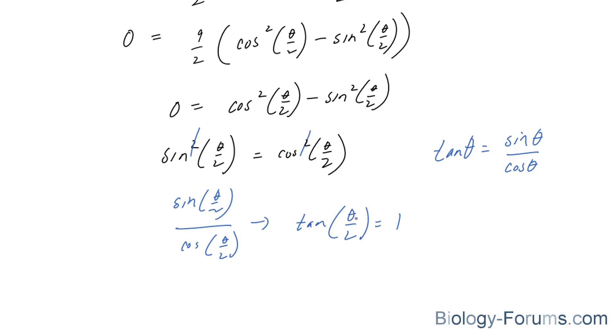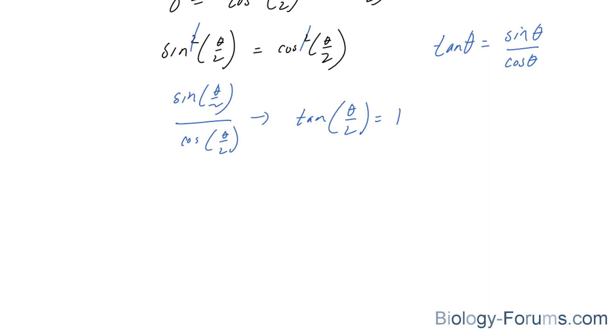Now, to isolate for what's inside here, the angle, you can take the inverse tangent of both sides. If you take the inverse tangent of both sides, you end up with theta over two is equal to tangent inverse of one.